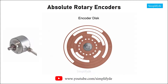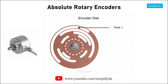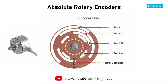The encoder disk consists of a series of opaque and transparent tracks mounted to a rotating shaft. The tracks of the disk are arranged concentrically around the center of the shaft. Photo detectors assigned to each track designate the resolution of the encoder. The higher the number of concentric tracks, the higher the accuracy.